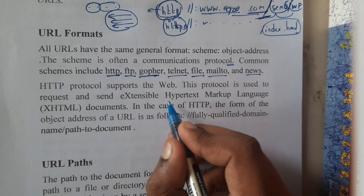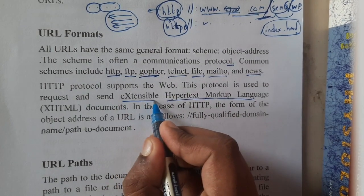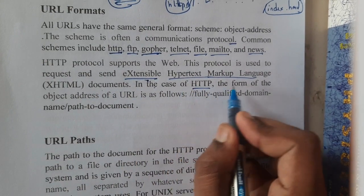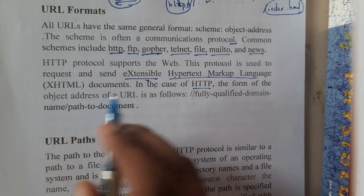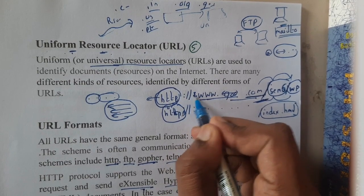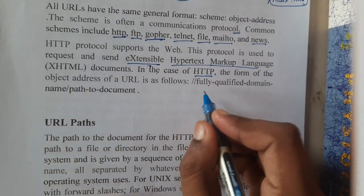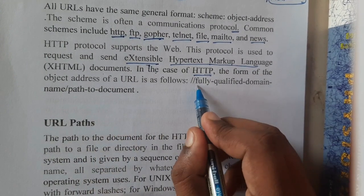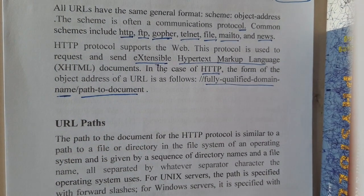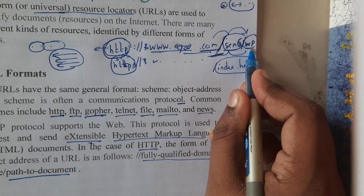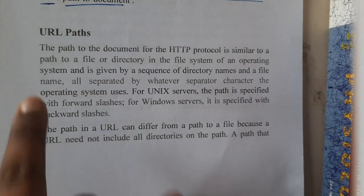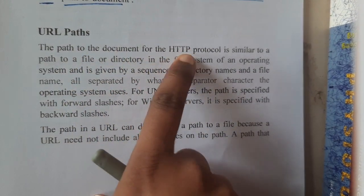The popular protocol we will be using mostly while creating websites is HTTP, because the HTTP protocol supports the web. This protocol is used to request Hypertext Markup Language or Extensible Hypertext Markup Language files. For HTTP, the form of object address will be: HTTP colon slash slash www dot, then the website name with the domain name extension, and at the end the path to the document.